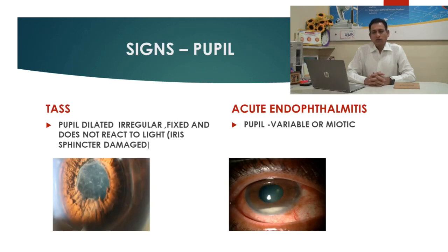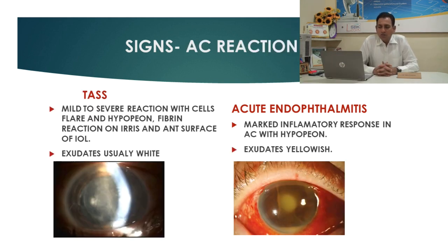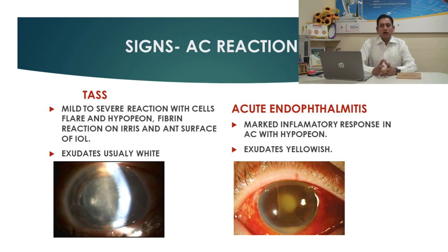The pupil in TASS will be dilated, irregular, and fixed — it will not react to light because of sphincter damage. The pupil in endophthalmitis may be miotic or variable. In the anterior chamber, there will be mild to severe reaction with cells, fibrin formation over the iris and anterior surface of the lens. In TASS the exudate is usually white, whereas in acute endophthalmitis the exudate is usually yellowish with marked inflammatory response and hypopyon.